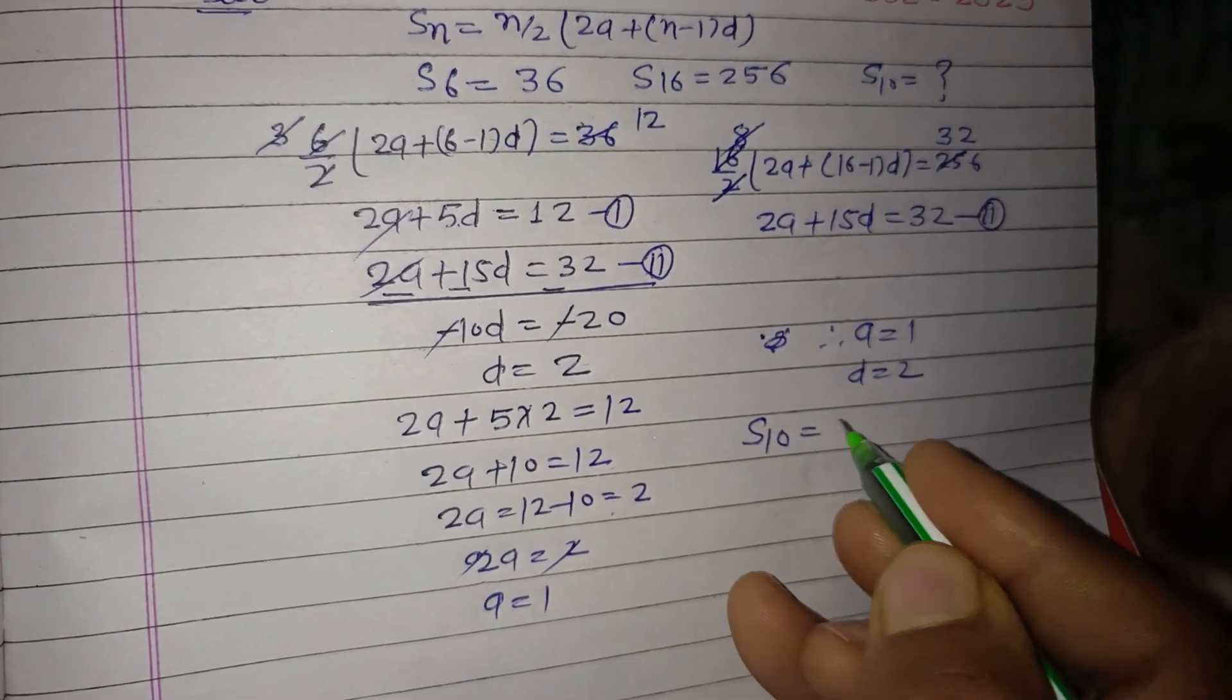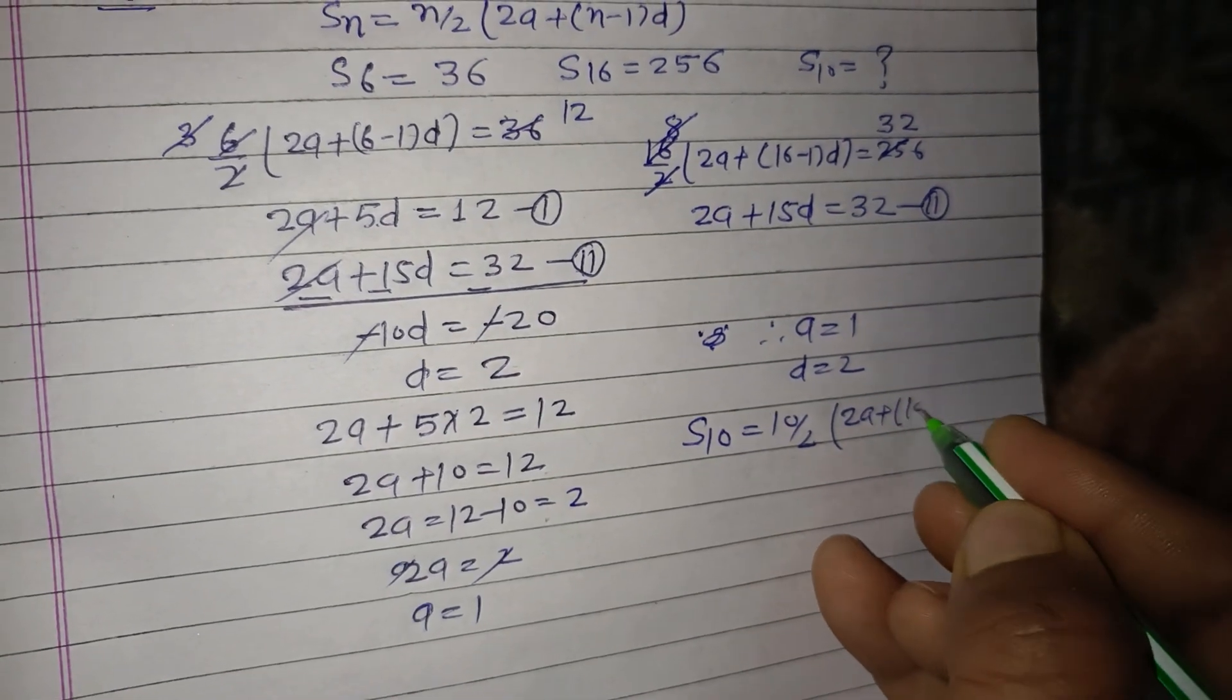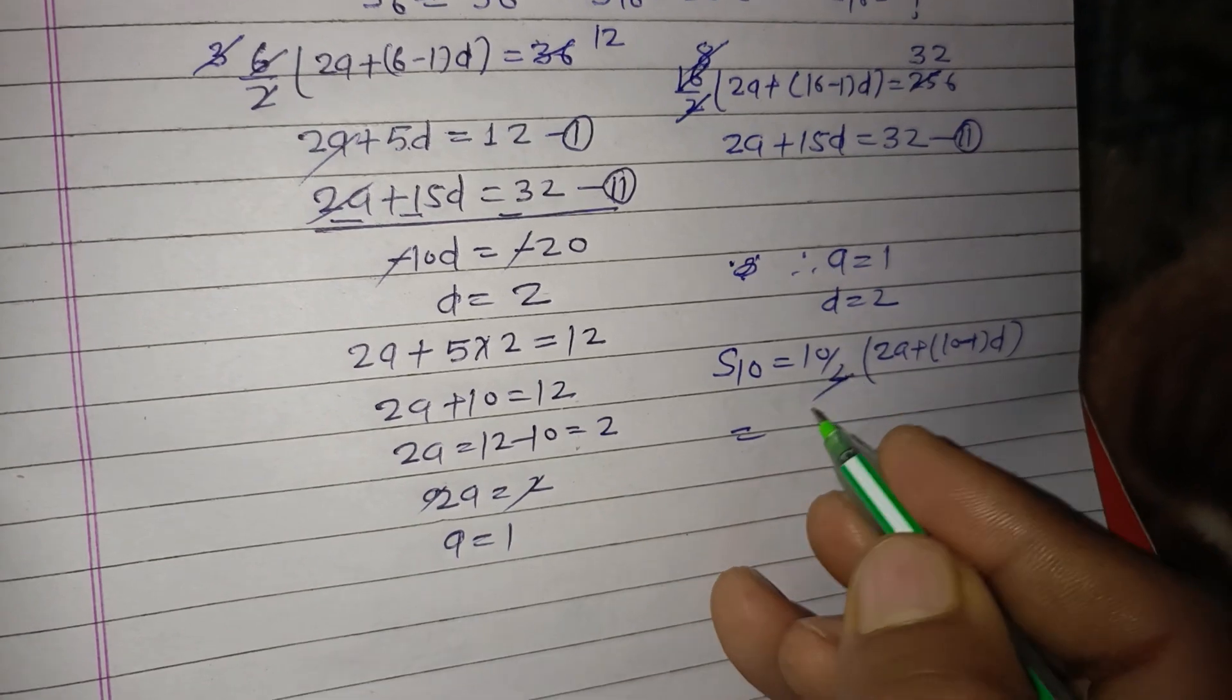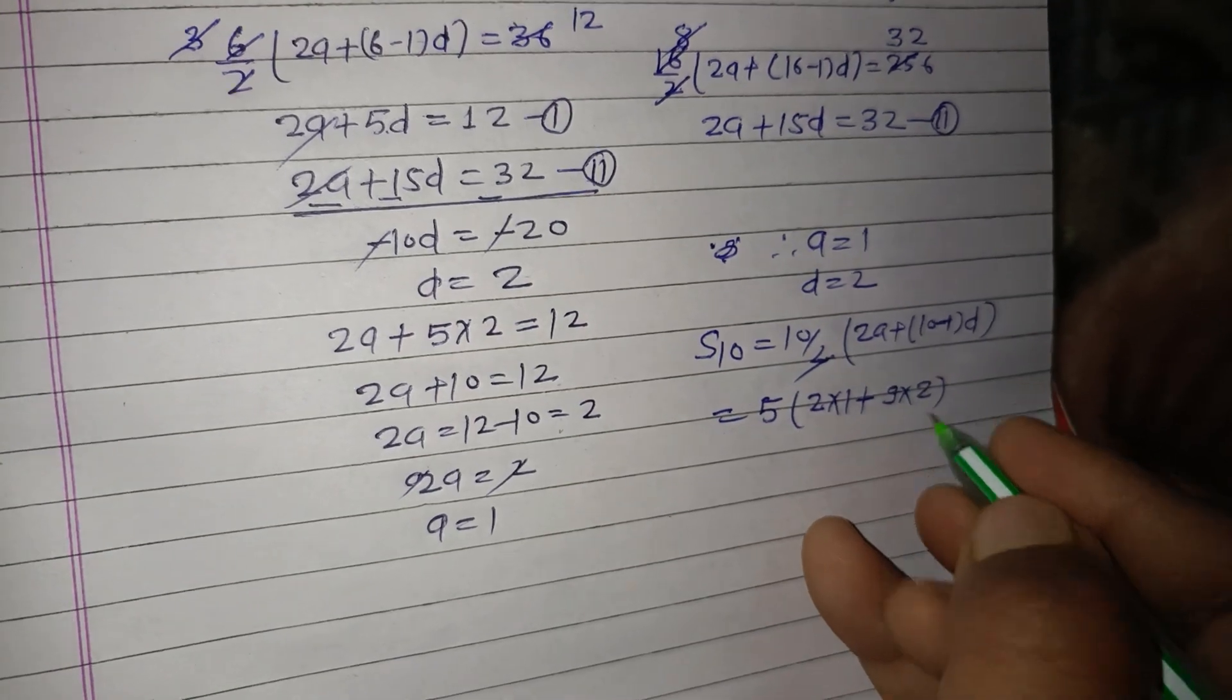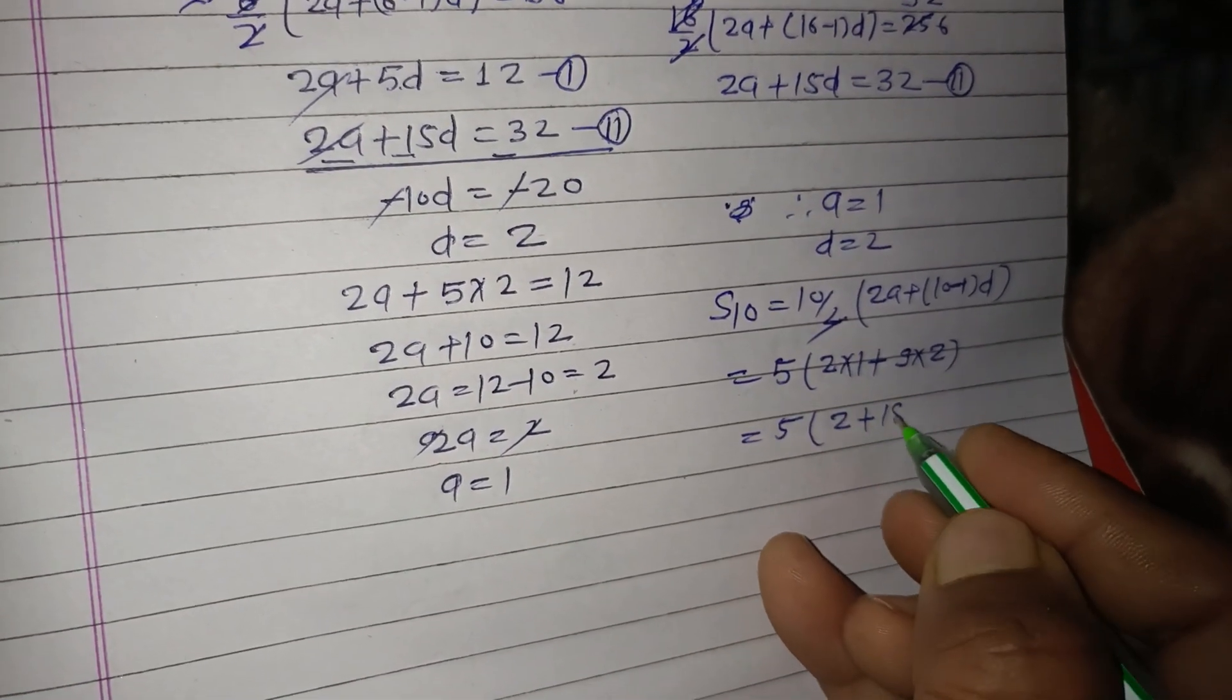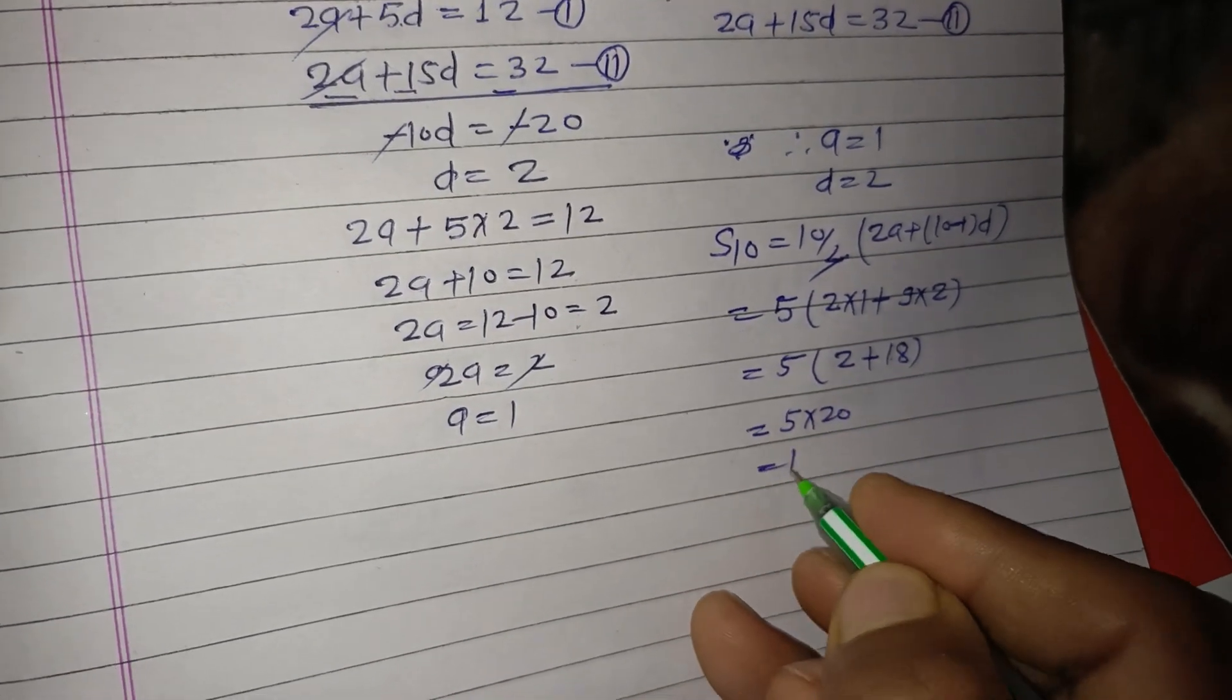Now we require S_10 which is 10/2(2a + (10-1)d). So this is 5(2×1 + 9×2), which equals 5(2 + 18) equals 5×20, this is 100.